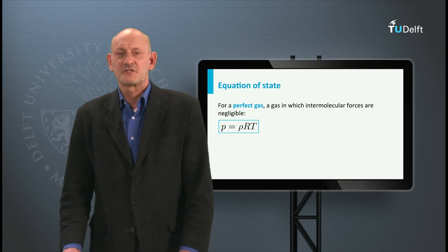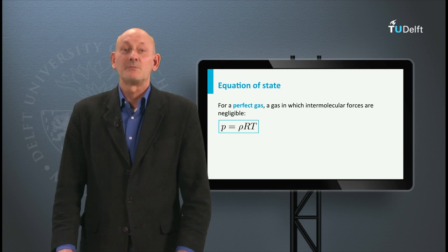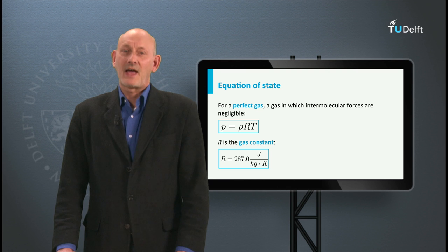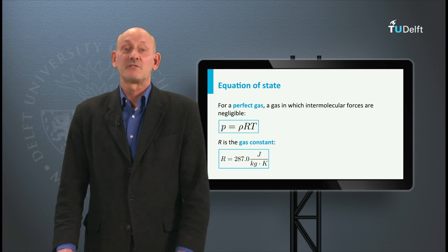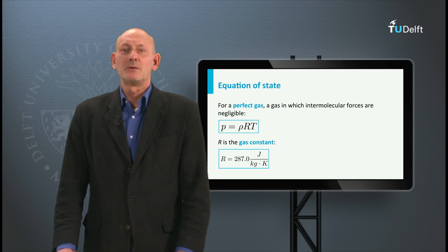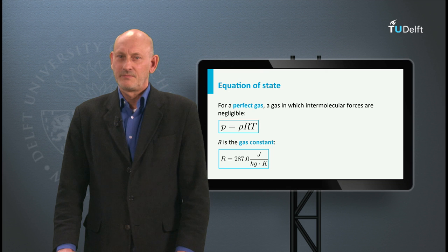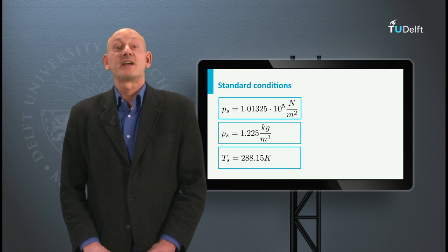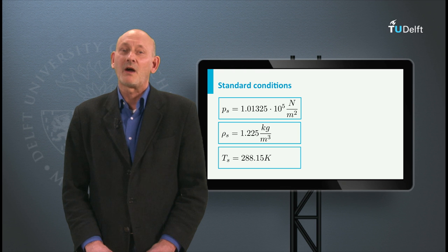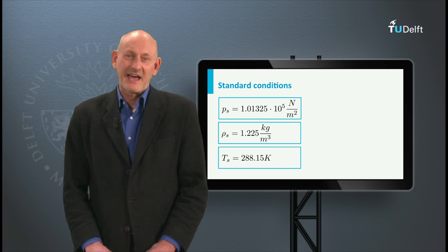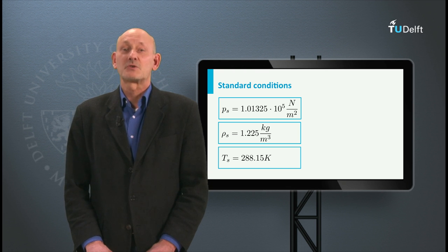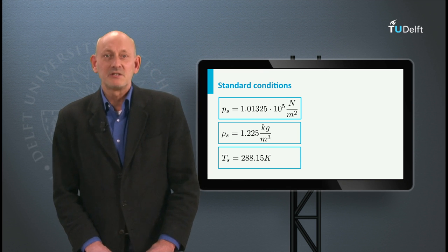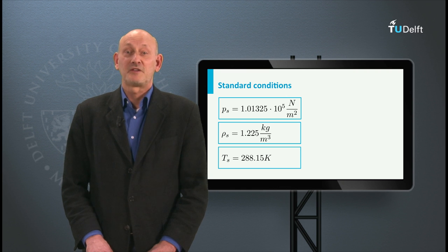Furthermore, we can use the equation of state of a perfect gas: P is rho times RT, in which R is the so-called gas constant — for air it is 287 joules per kilogram Kelvin. A perfect gas is a gas in which the forces between the molecules are negligibly small. We often refer to the properties of air at standard sea level conditions: the pressure is 1 bar, or 1013.25 hectopascal, or 1.01325 times 10 to the power 5 newtons per square meter.